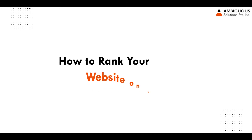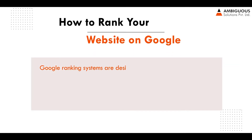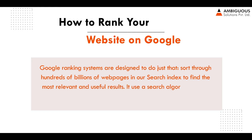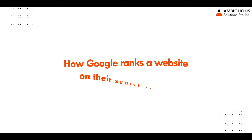How to rank your website on Google. Google ranking systems are designed to sort through hundreds of billions of web pages in our search index to find the most relevant and useful results. It uses a search algorithm to give you useful and relevant Google search results in a fraction of a second.